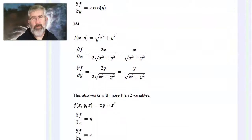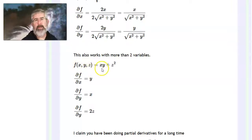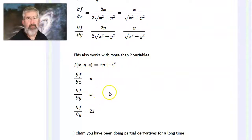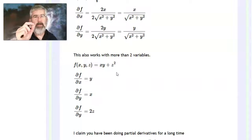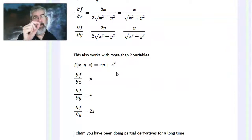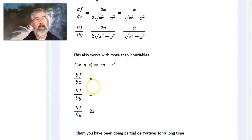This also works with more than two variables, but with more than two variables you have more partial derivatives. For instance, here's a function of three variables: f(x, y, z) = x·y + z². Taking the partial with respect to x, both y and z are constants. In 3D space, if you move in just the x direction, your y and z components aren't changing; if you move just in the y direction, your x and z aren't changing; similarly for z.